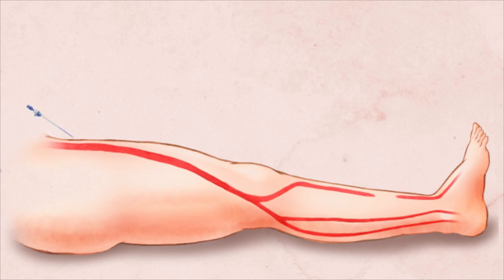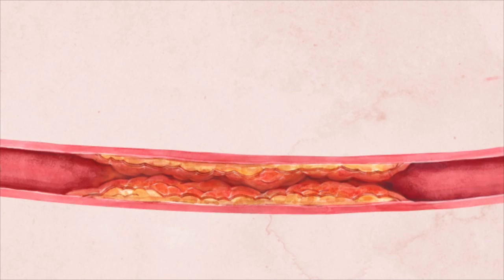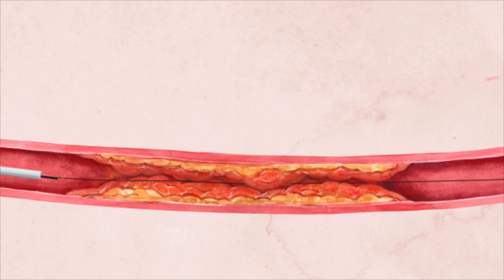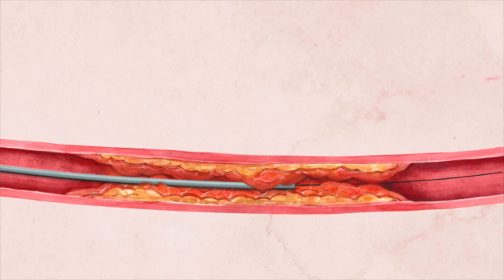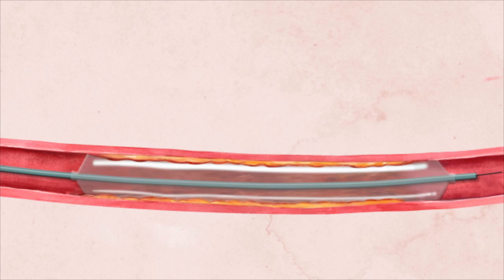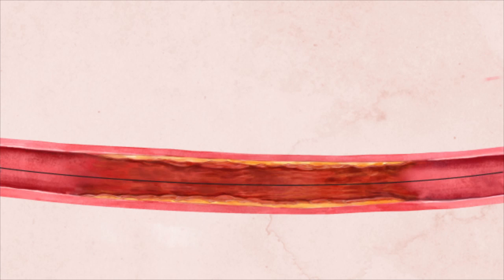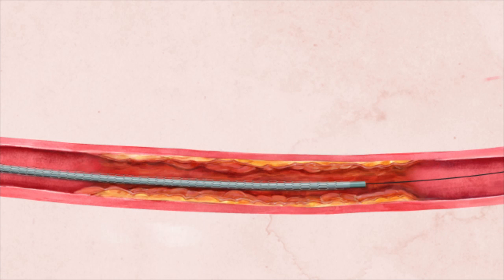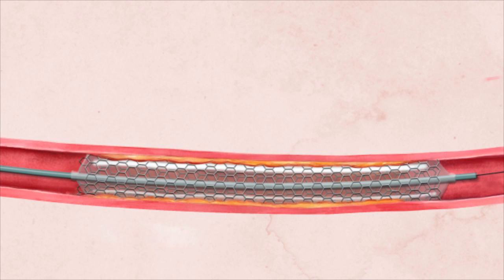A new variation of this procedure has been developed for more complicated artery blockages. The blocked blood vessel is approached from both the femoral artery above and from the foot or ankle below. Wires and catheters are advanced to the blocked artery from both directions until the blockage is crossed either from above or below. Once the blockage is crossed, the doctor can then inflate an angioplasty balloon and stent, if needed, to reopen the artery.